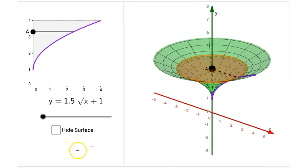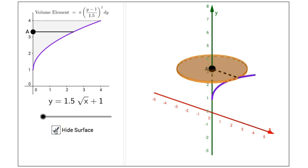On the left side, if you click on the checkbox next to hide surface, it will hide that surface that is created in the right side view and leave you with the disk or the volume element.